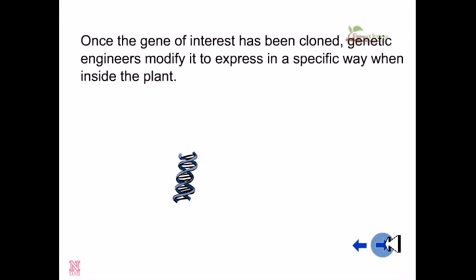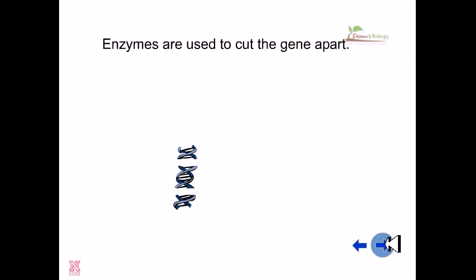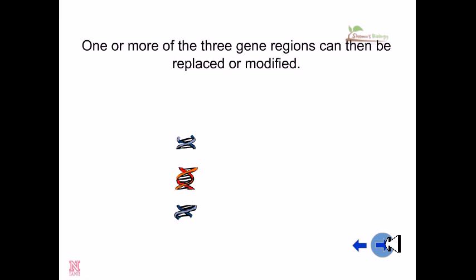Once the gene of interest has been cloned, genetic engineers modify it to express in a specific way when inside the plant. Enzymes are used to cut the gene apart. Then one or more of these three gene regions can then be replaced or modified.